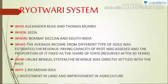Different surveys were also carried out by Munro and Alexander Reed to determine how much taxation could be collected. They were also saying that the British should act like fathers, protecting the Rayats under their charge. The next topic is 'All Was Not Well.'